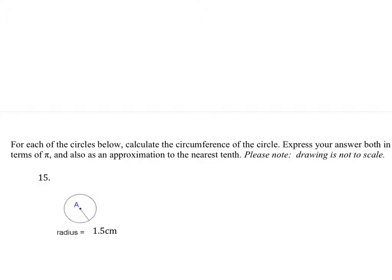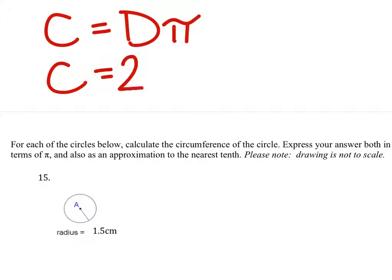So hopefully you guys remember that the circumference is the diameter times pi, but if we have it in terms of the radius, the diameter is two radiuses times pi.